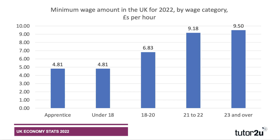These are the new minimum wage rates per hour by wage category. As you probably know, there are lower rates for apprenticeships and under 18s and people aged between 18 and 20 and 21 to 22. So the increase to £9.50 per hour is for adult workers aged 23 and over, though there has been an increase in some of those other rates too.